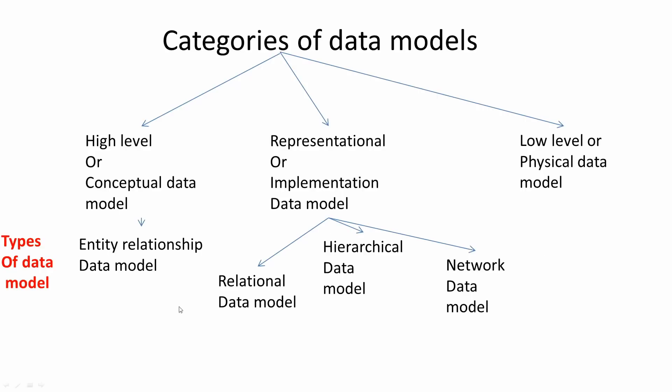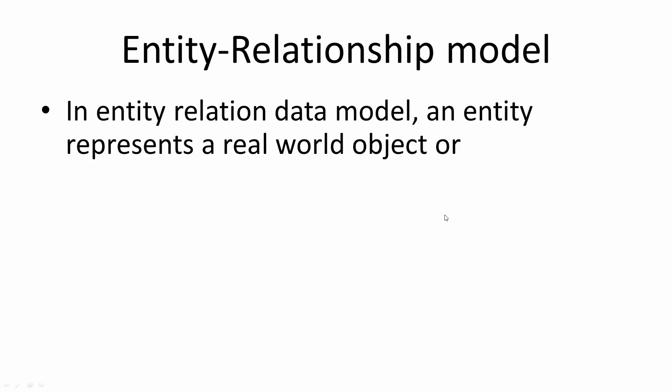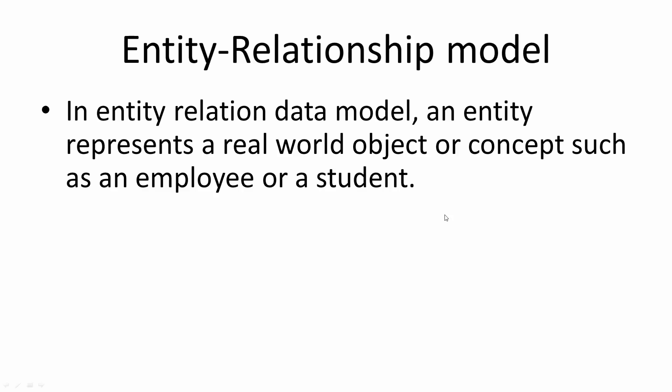So these are the four types of data models: entity relationship data model, relational data model, hierarchical data model, and network data model. Let's look at the entity relationship data model first. As the name suggests, in this data model we have multiple entities that represent real world objects or concepts, such as an employee or a student.